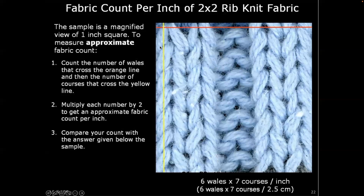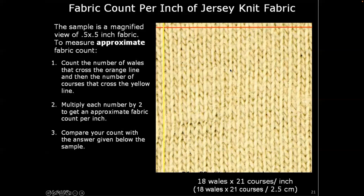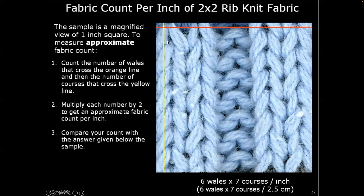This is a rib knit fabric. The loops are not as regular as a jersey because it's a different pattern, but you still count the columns and rows to calculate fabric count.